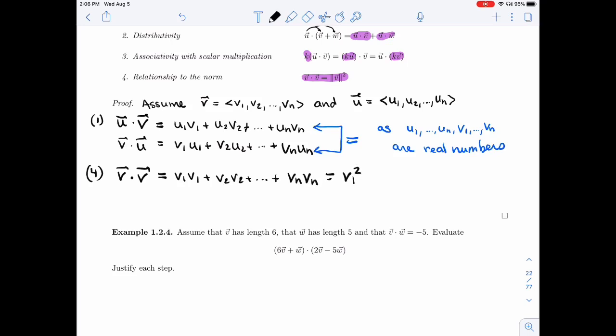And so that will be v1 squared, v2 squared, v_n squared. So v dot v is pretty simple. It's just the sum of the square of the components.